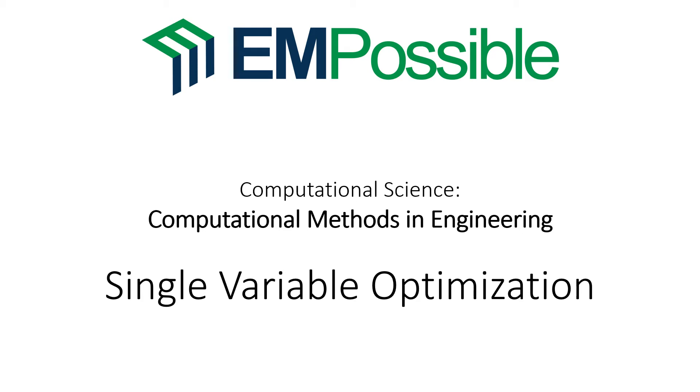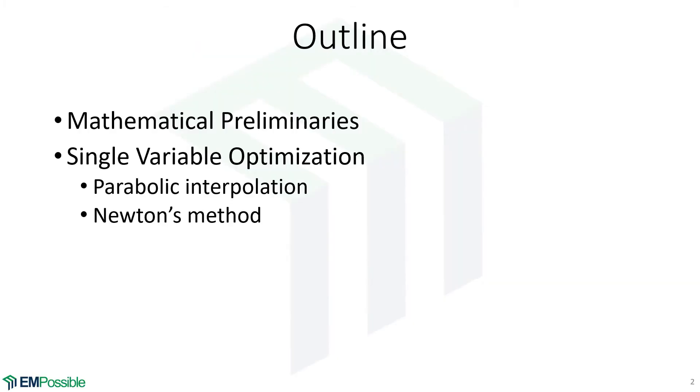Single variable optimization. We'll cover some mathematical preliminaries, and this is actually minimums and maximums of functions and how the first and second order derivatives relate to that. We'll then get into single variable optimization. Based on everything we've covered in the course so far, we'll be able to cover parabolic interpolation and Newton's method very quickly. And we'll conclude this by talking about the golden section search.